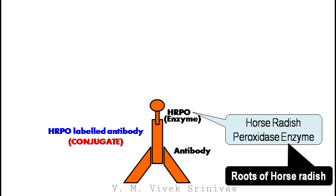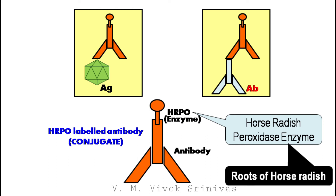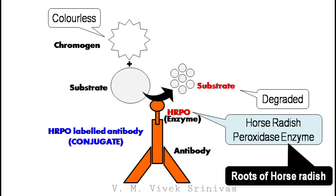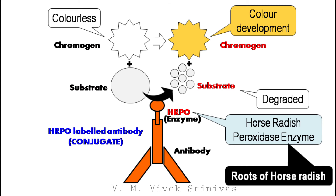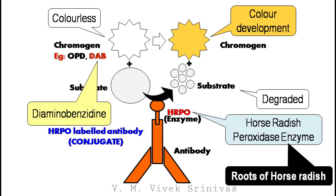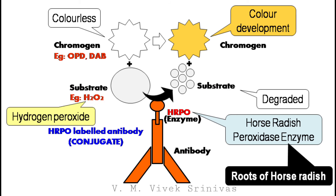This enzyme-linked antibody attaches to either antigen or antibody. Subsequently, on addition of substrate plus chromogen, due to the catalytic reaction mediated by this HRPO enzyme, the colorless chromogen turns to color. In this technique, orthophenylenediamine (OPD) or diaminobenzidine (DAB) are used as chromogen, along with hydrogen peroxide as substrate for HRPO enzyme.